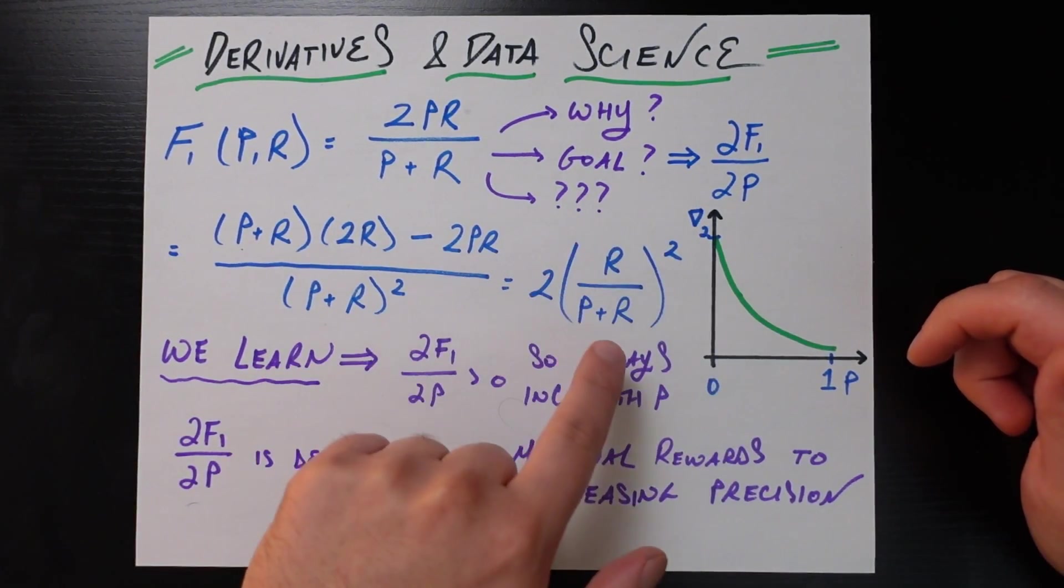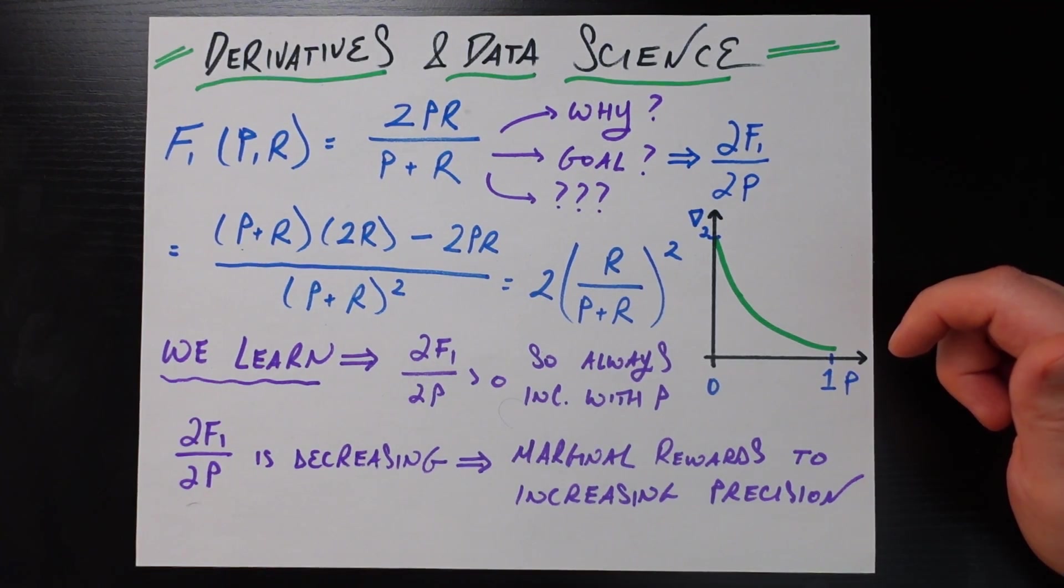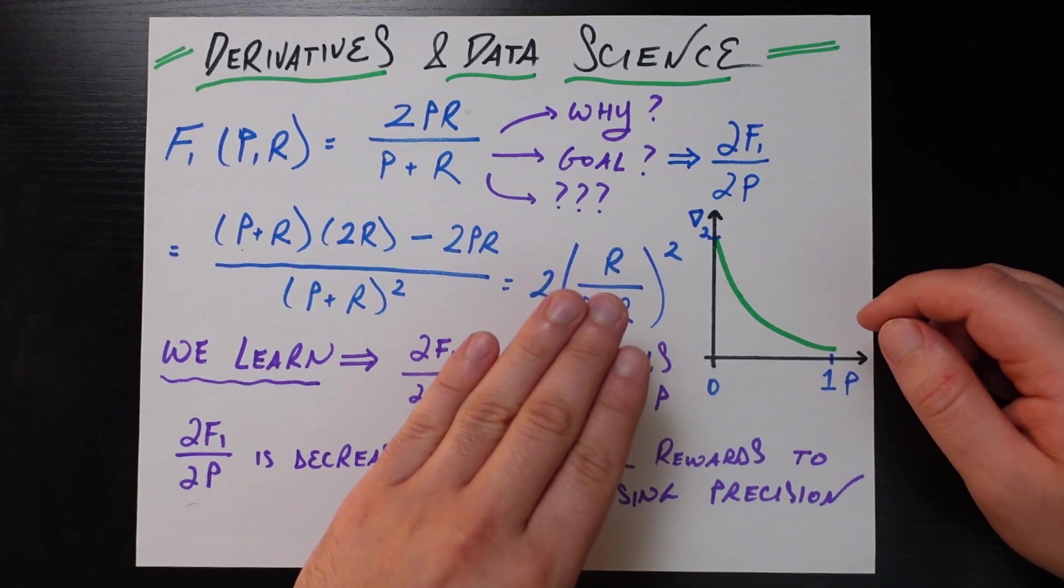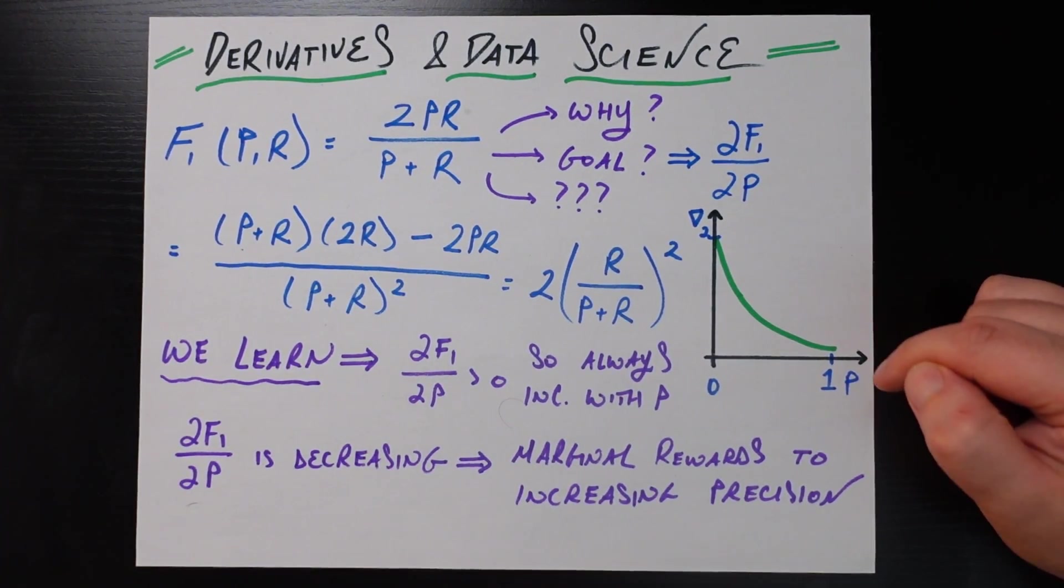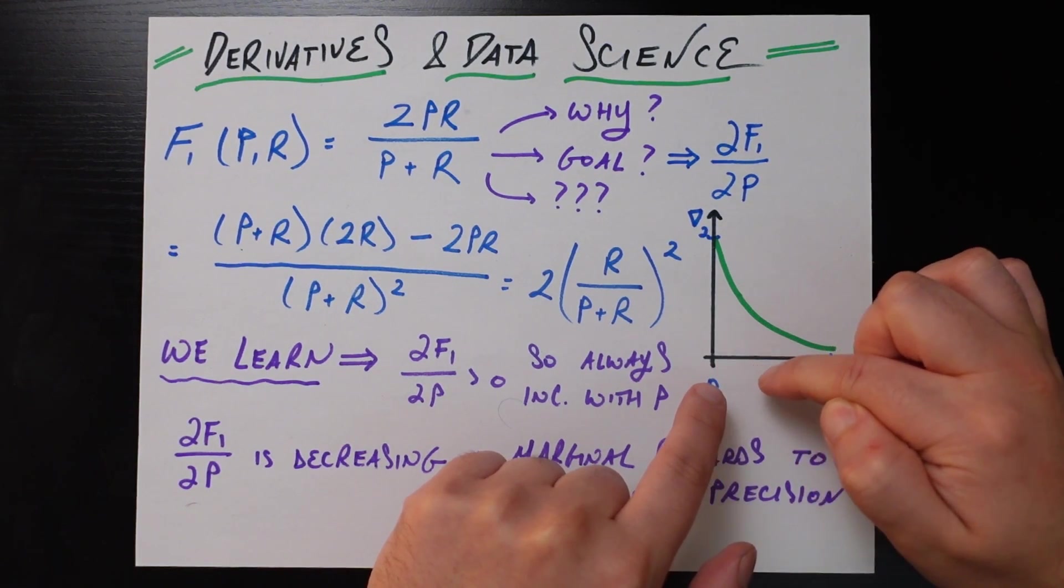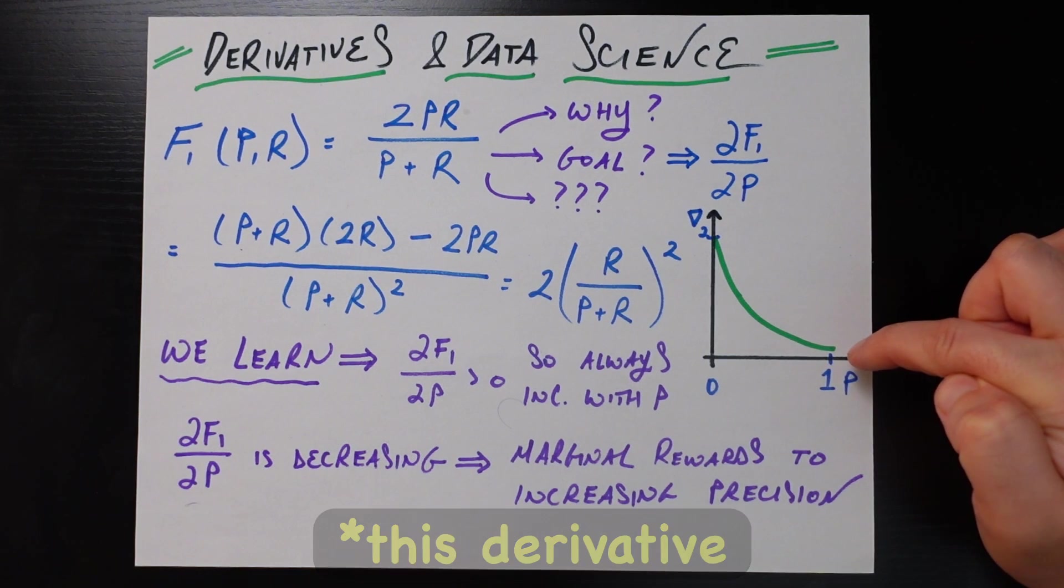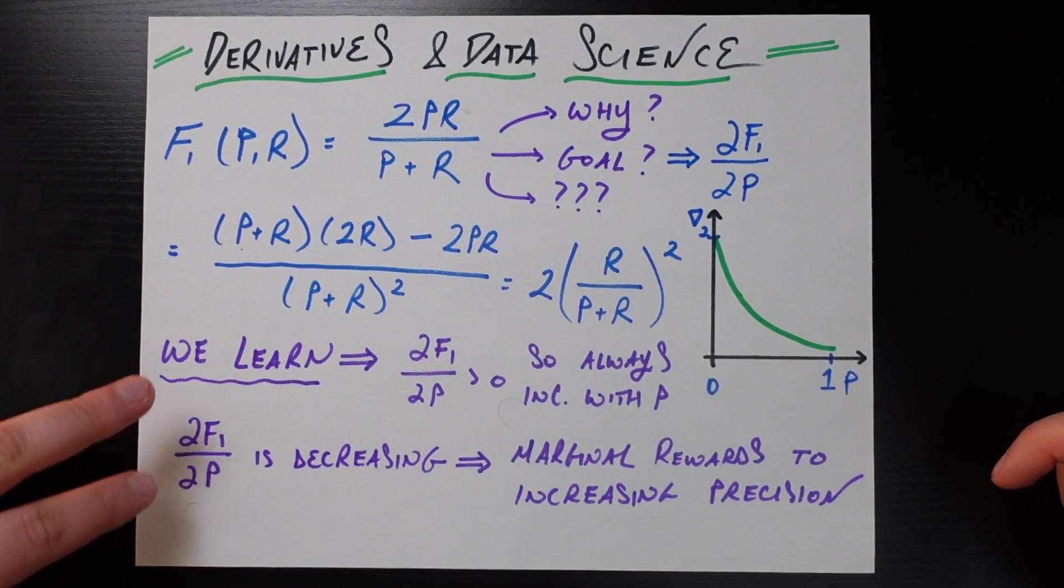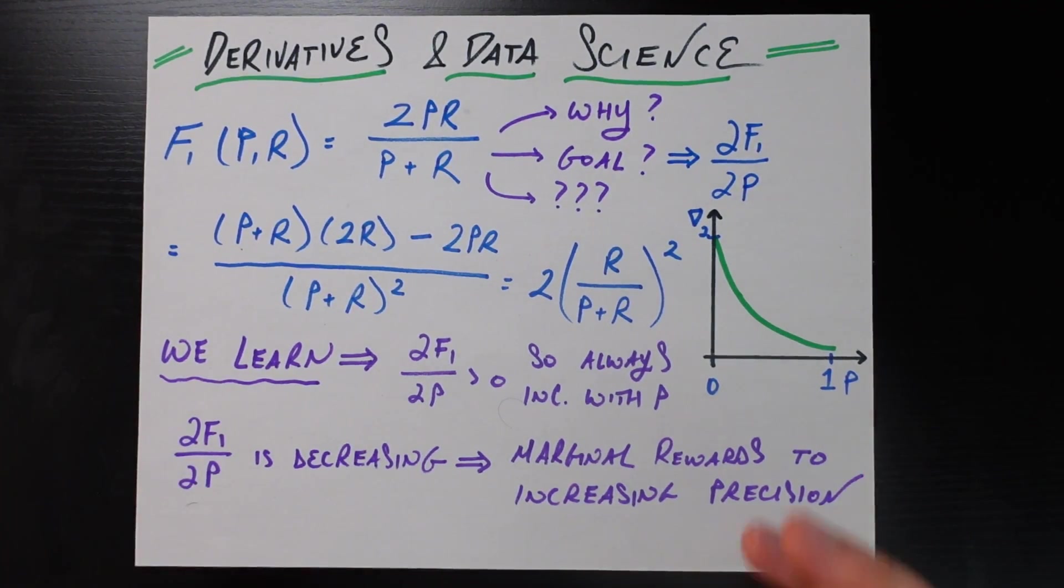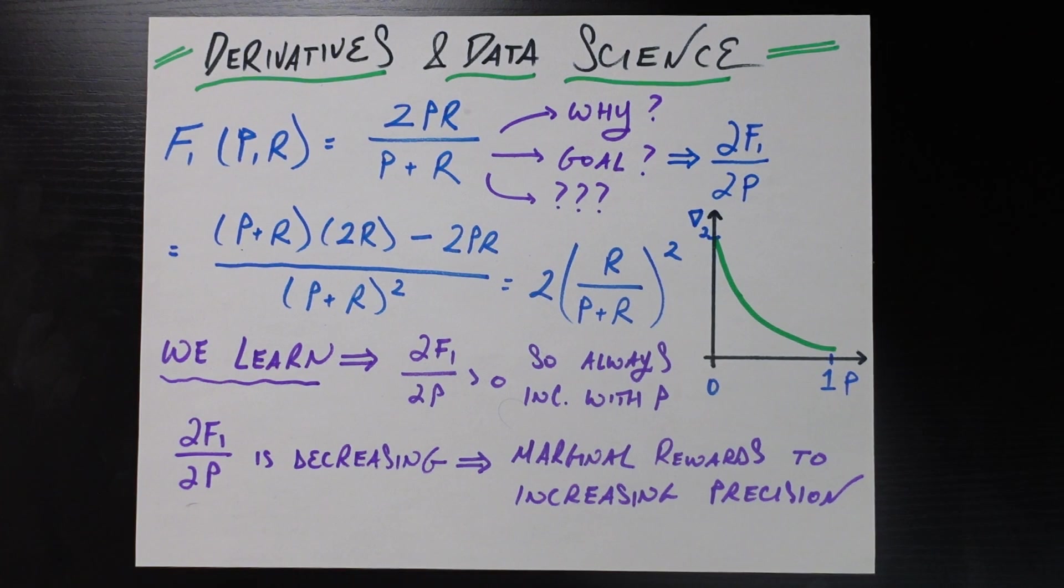And if I plot out this curve here, as precision gets bigger and bigger and bigger, you're going to notice two things. First, this is always positive because it's 2, a positive number, times something squared, which is always a positive number. So that's observation number one, is that this derivative is always positive. And observation number two is because precision only occurs in the denominator, as we get higher and higher and higher and higher precisions, this denominator is going to get smaller and smaller and smaller and smaller.